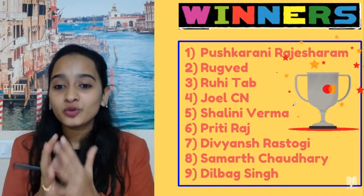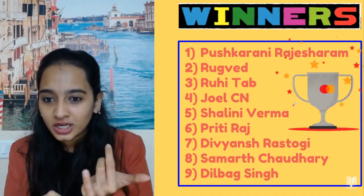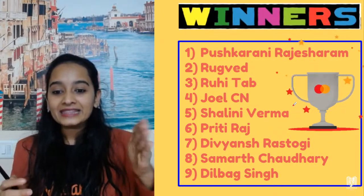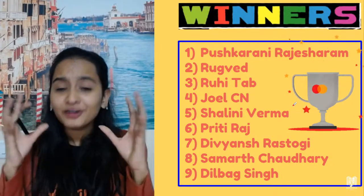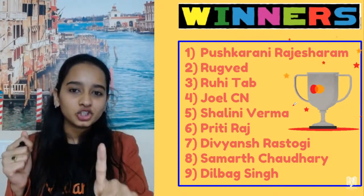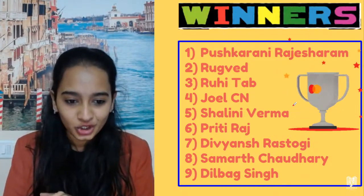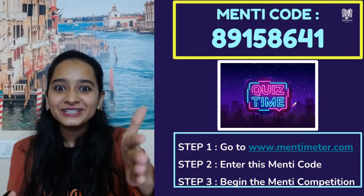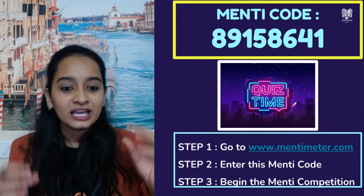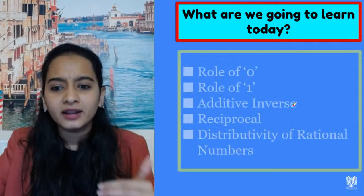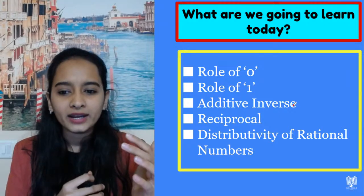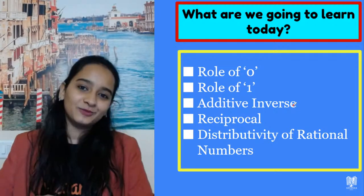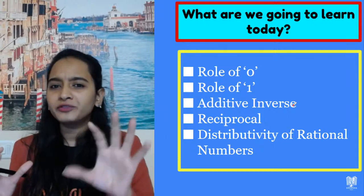So these are the top nine winners I've chosen — good job, everyone. We have Pushkarani, Raghuved, Ruhi, Joel, Shalini, Preeti, Divyansh, Samarth Chaudhary, and Dilbagh Singh. Hundreds of students answered but I've taken only a few names. I will make sure from the next one I take more names. So let's get started — what are we going to do in today's session? We're going to start with a Menti, then learn the role of zero, the role of one, additive inverse, reciprocal, whether reciprocal and multiplicative inverse are the same, and then distributive property. By the end of this video, you will know all of this perfectly.